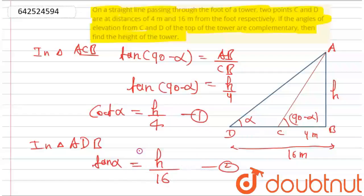When you multiply both the equations, after multiplying equation one and two, cot alpha into tan alpha is on the left-hand side, so that will give you h upon 4 into h upon 16. Because tan and cot are reciprocal to each other, this will cancel and give you one here.